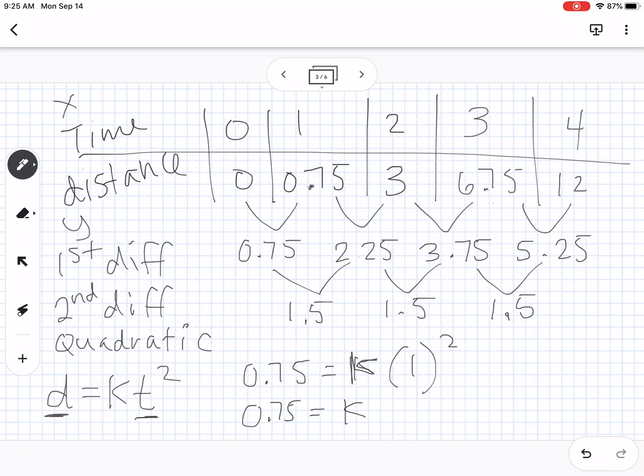So 1 squared is just 1, so that tells us that our K value is 0.75. And you can do this with any value. You could say 2, 3. So you could say 3 over here, 2 squared, divide it, and you'll get 0.75 for any value. So our function would be D equals 0.75 T squared.